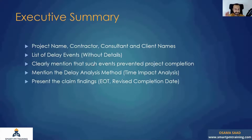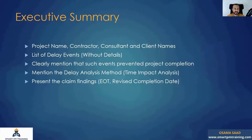The first page of the claim should present the claim findings — EOT, revised completion date. Don't make someone read 300 pages to find out you're asking for three months' extension of time and one million dollars in prolongation costs. Make it clear. Let the reviewer know upfront what you are expecting from the claim, and reference the relevant contract clauses.